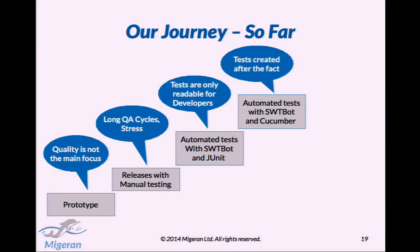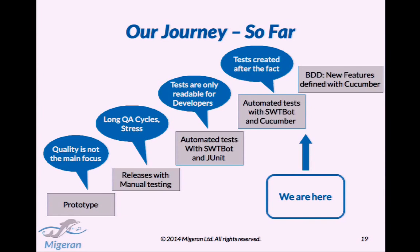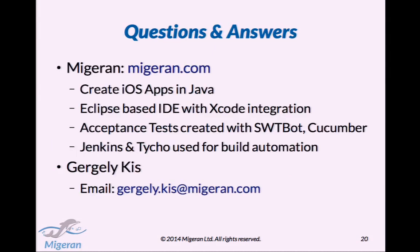This is the journey that I showed you so far. But tests are still created after the fact — we do the specification in our project management system, and the features are still created afterward. So the next step for us is to migrate to true BDD — true behavior-driven development. First we will specify the new features in Cucumber, and then write the code and of course the tests using the Cucumber language. Thank you. If you have any questions, I'm happy to answer.